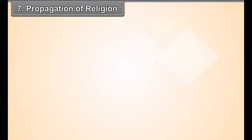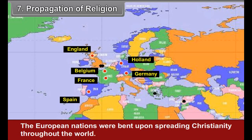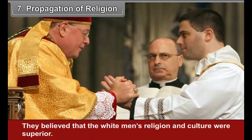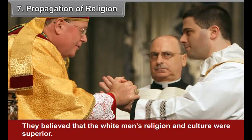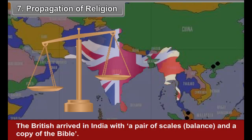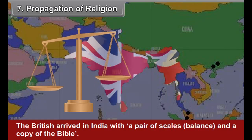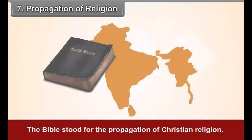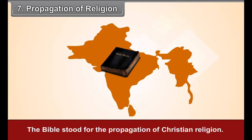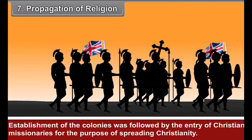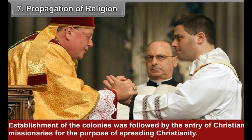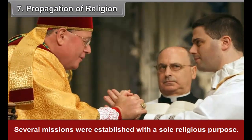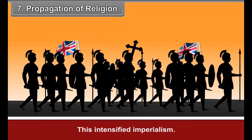Seventh, propagation of religion: The European nations were bent upon spreading Christianity throughout the world. They believed that the white man's religion and culture were superior. The British arrived in India with a pair of scales — that is, a balance — and a copy of the Bible. The Bible stood for the propagation of Christian religion, and the scale for trade. Establishment of the colonies was followed by the entry of Christian missionaries for the purpose of spreading Christianity. Several missions were established with a sole religious purpose. This intensified imperialism.